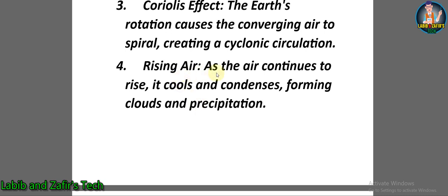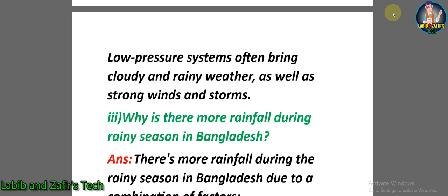Number four — rising air: as the air continues to rise, it cools and condenses, forming clouds and precipitation. Low pressure systems often bring cloudy and rainy weather as well as strong winds and storms.